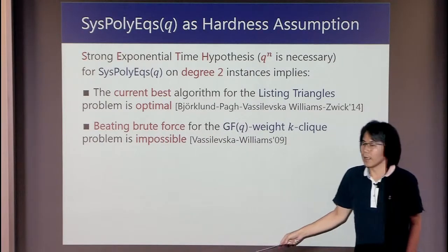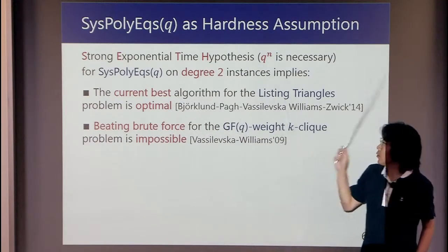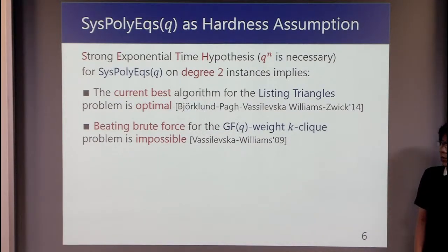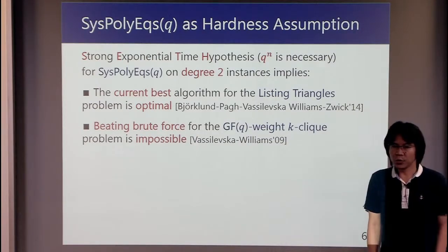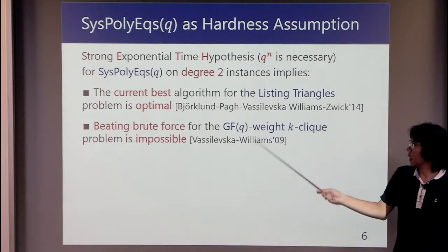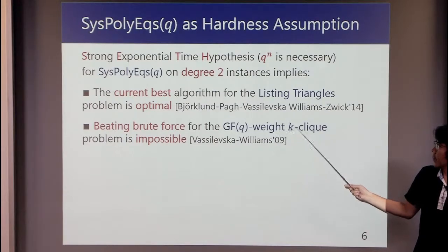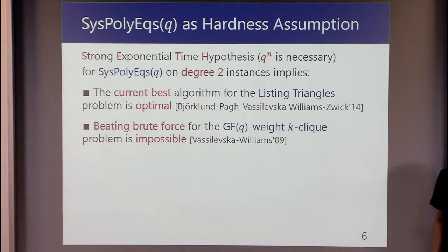That is, the current best algorithm for the resting triangle problem is optimal, and beating brute force for the GF[q]-weighted k-clique problem is impossible. So the problem has been believed to be very hard.